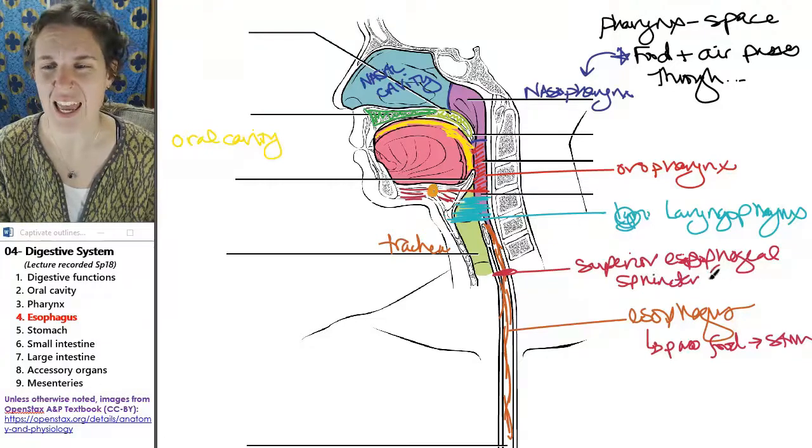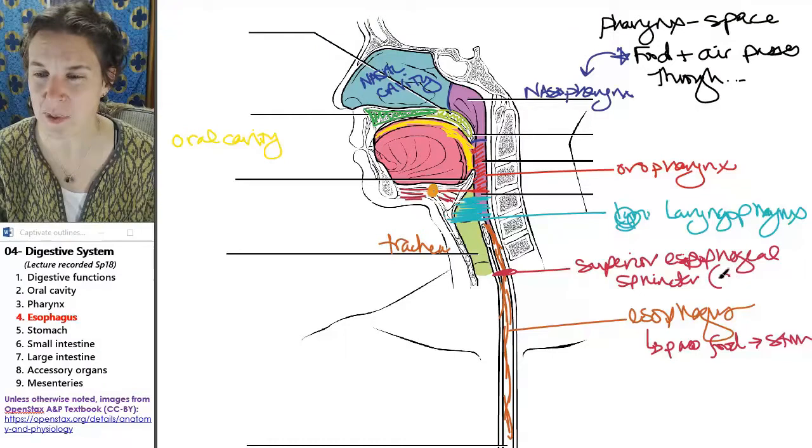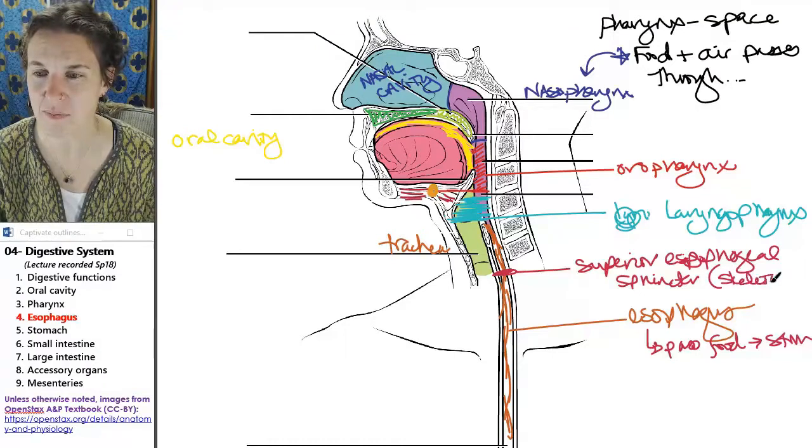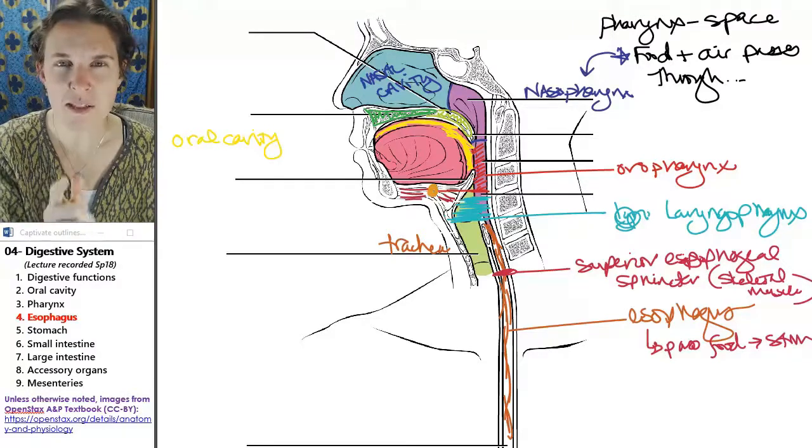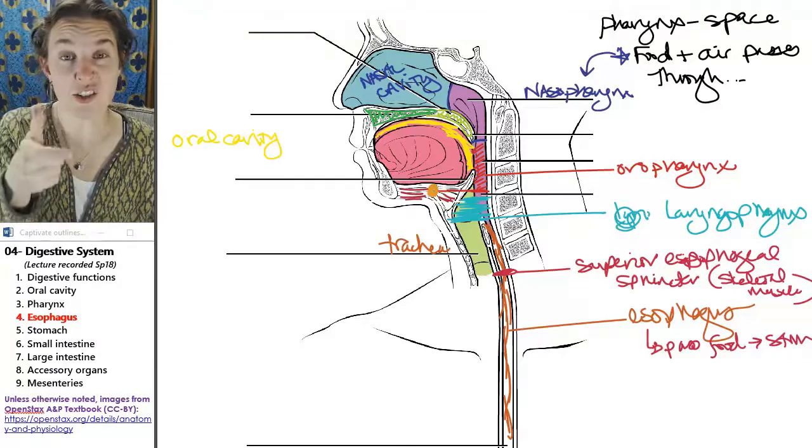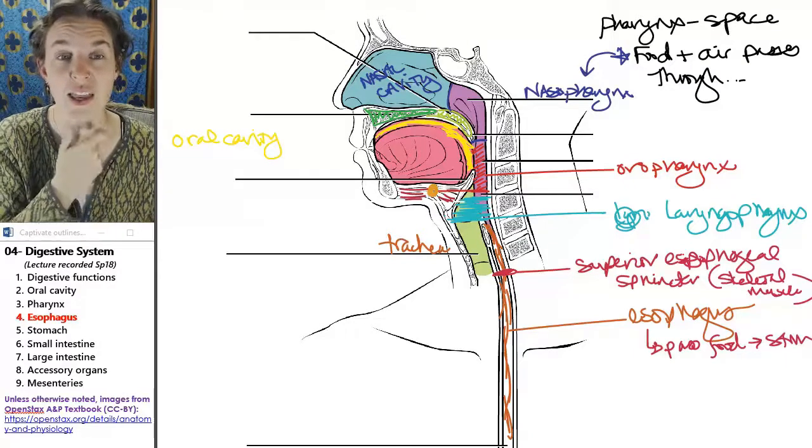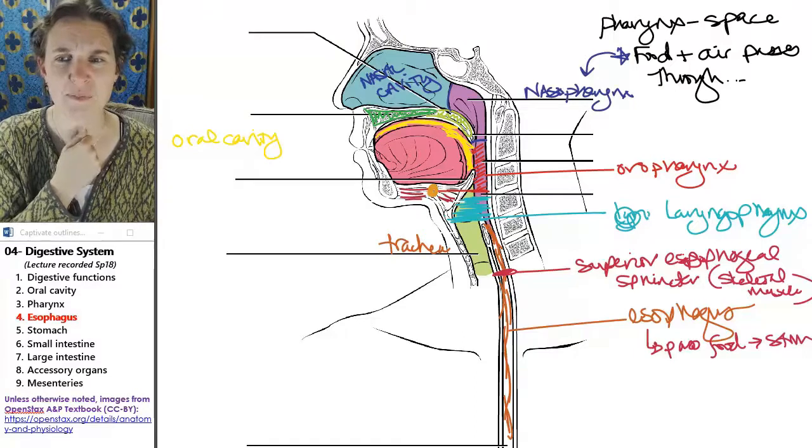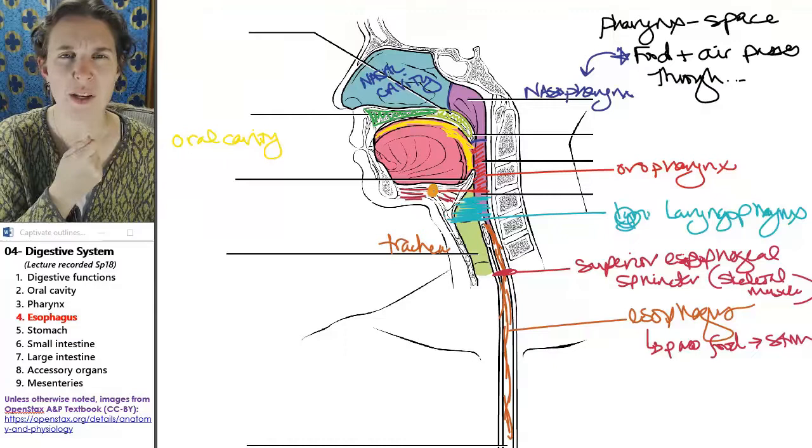And it's a constriction of skeletal muscle tissue. Now think about it. Skeletal muscle tissue is under conscious control. So this is a sphincter that can be closed off when breathing.